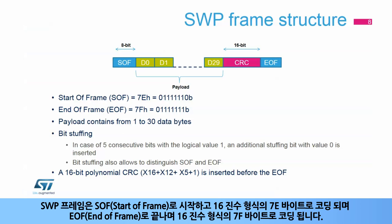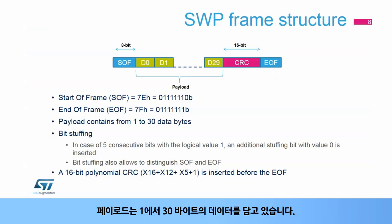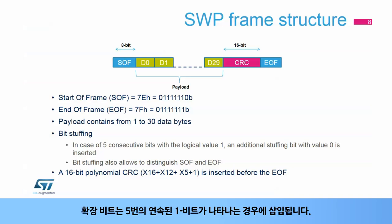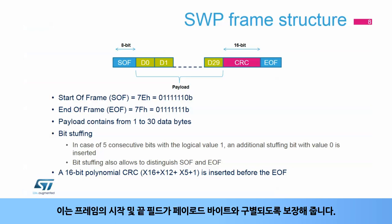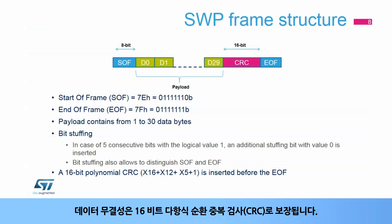SWP frames start with a start-of-frame field, coded by a 0x7E byte in hexadecimal format, and end with an end-of-frame field, coded by a 0x7F byte in hexadecimal format. The payload contains between 1 and 30 bytes of data. The protocol also implements bit stuffing: an extra bit is inserted in case of 5 consecutive bits at 1. This guarantees that the start and end of frame fields are distinguished from the payload bytes. Data integrity is guaranteed by a 16-bit polynomial cyclic redundancy check, or CRC.